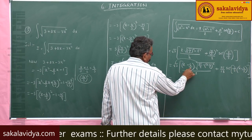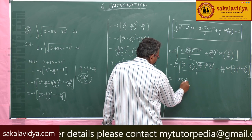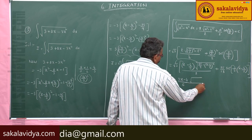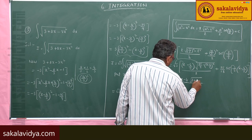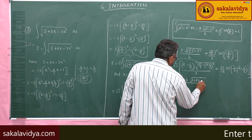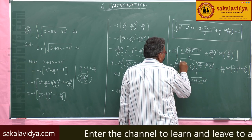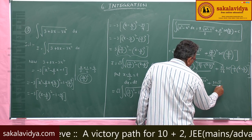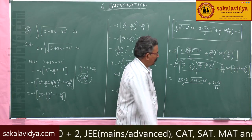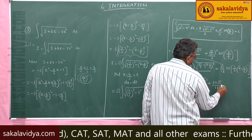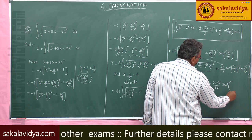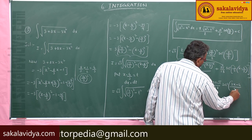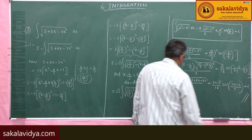Multiplying 3 with (x minus 4/3) gives (3x minus 4). So the final answer can be written as (3x minus 4)/6 times the square root of (3 plus 8x minus 3x squared), plus 25 root 3 divided by 18 times sin⁻¹((3x minus 4)/5) plus constant of integration.